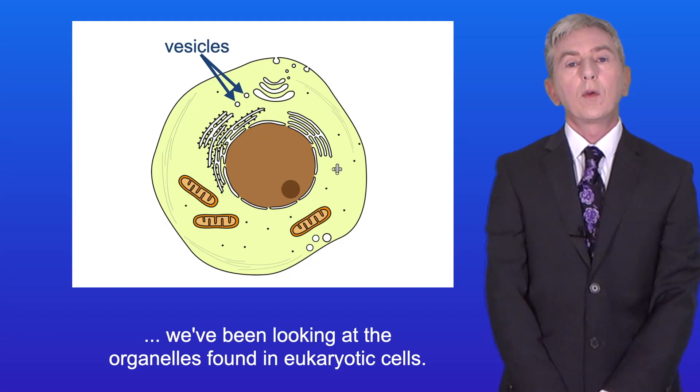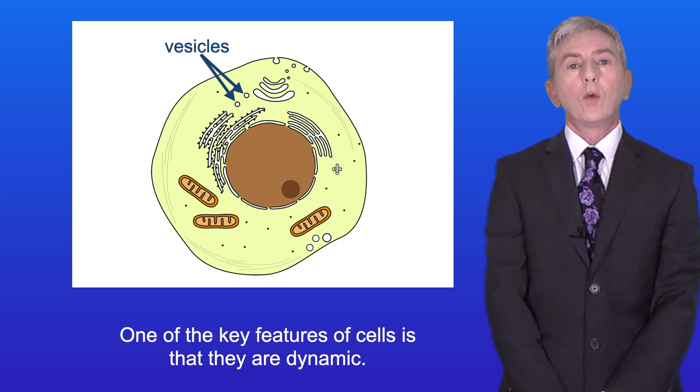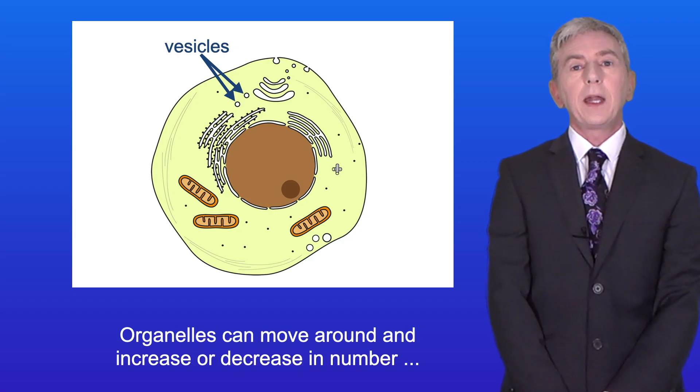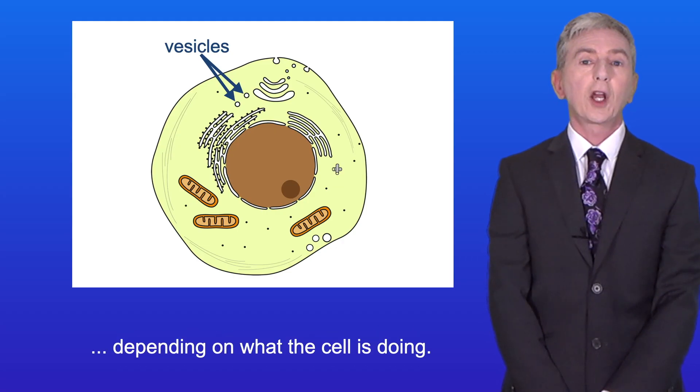Over the last few videos we've been looking at the organelles found in eukaryotic cells. One of the key features of cells is that they're dynamic. Organelles can move around and increase or decrease in number depending on what the cell is doing.